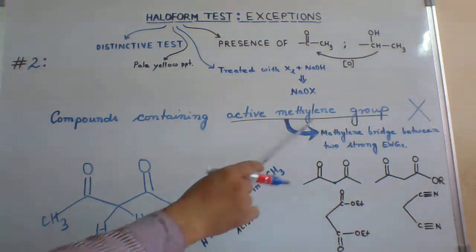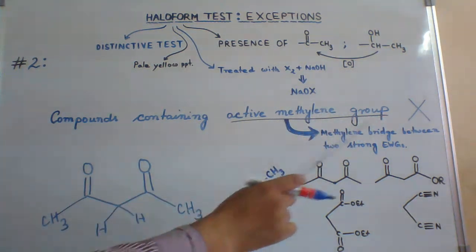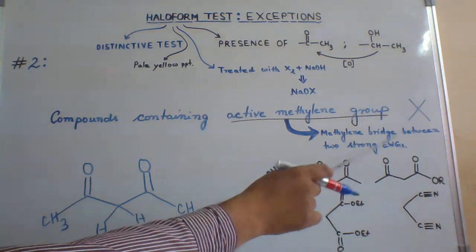What is an active methylene group? It is a methylene bridge between two strong electron withdrawing groups.